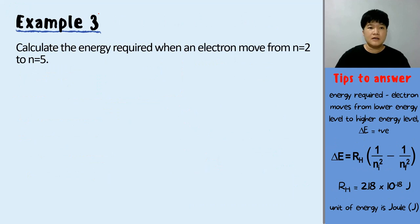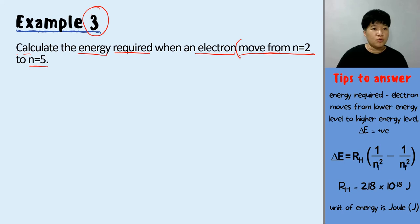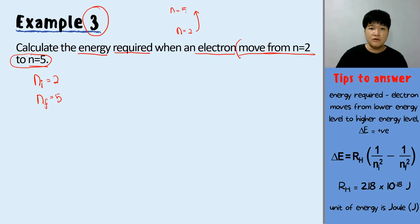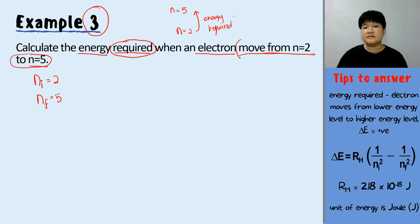Let's try an example: calculate the energy required when an electron moves from N equals 2 to N equals 5. Moving from N equals 2 means N initial is 2, and N final is 5 — moving up from a lower to a higher energy level. That's why the question states energy is required — energy is absorbed. We can already predict that delta E will be positive because energy is absorbed.